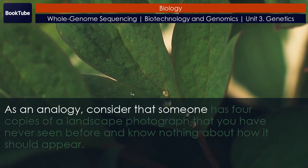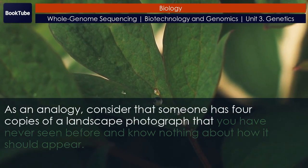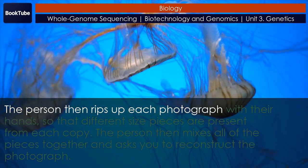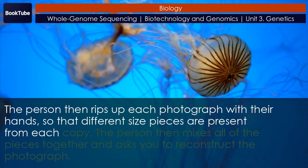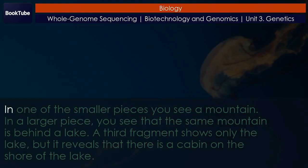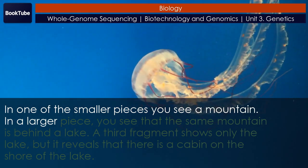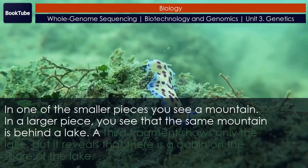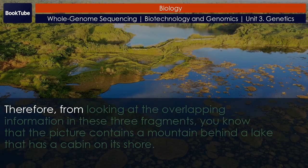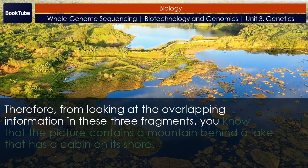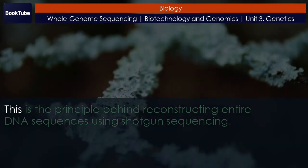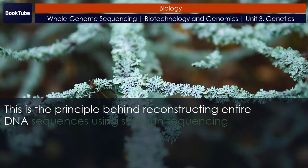As an analogy, consider that someone has four copies of a landscape photograph that you have never seen before. The person rips up each photograph so that different size pieces are present from each copy, then mixes all of the pieces together and asks you to reconstruct the photograph. In one smaller piece you see a mountain; in a larger piece, the same mountain is behind a lake; a third fragment shows the lake and reveals a cabin on the shore. From the overlapping information in these three fragments, you know the picture contains a mountain behind a lake that has a cabin on its shore. This is the principle behind reconstructing entire DNA sequences using shotgun sequencing.